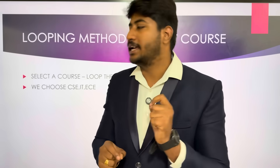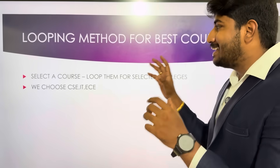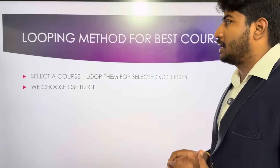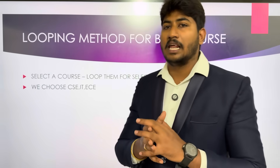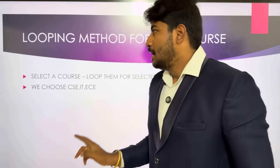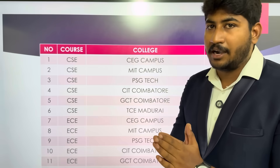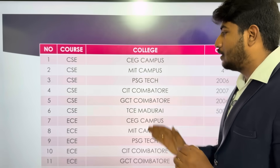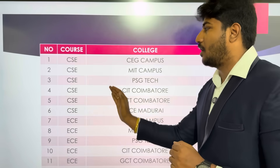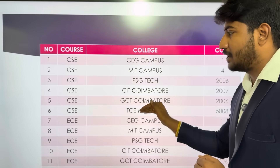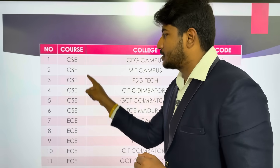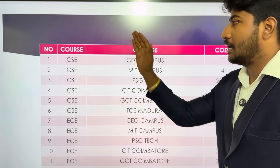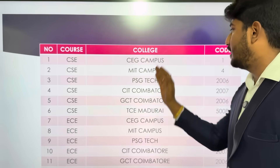In this looping method — CS, IT, EC — in the main department, how do you choose the looping method? In this case, we have to take 6 colleges. If you think about the computer science department, we have to take 6 colleges in the proper order. In that department, you can take the first 6 colleges for courses and colleges.